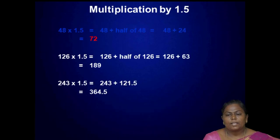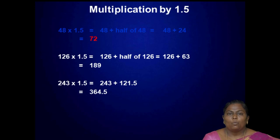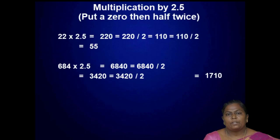Then, multiplication by 1.5. For 48 into 1.5: since 1.5 is 1 plus half, it equals 48 plus half of 48, which is equal to 48 plus 24, which is equal to 72.